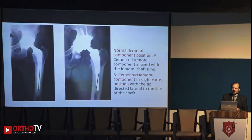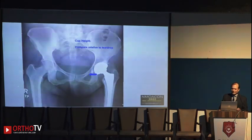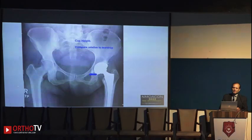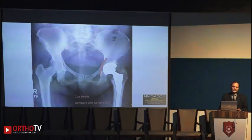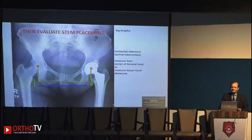Here you can see a varus placement of the stem in the image. Cup placement must be compared with reference to the teardrop — whether it is a normal placement, a protruding cup, or a laterally placed cup. This comparison is made with the teardrop and the ilioischial line.